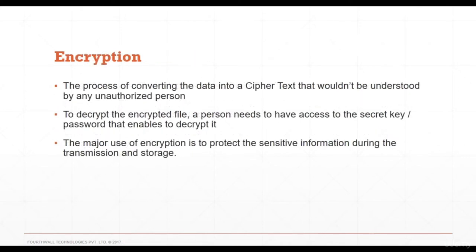Encryption is the process of converting data into cipher text that cannot be understood by any unauthorized person. To decrypt an encrypted file, a person needs the secret key or password. The major use of encryption is to protect sensitive information during transmission and storage.